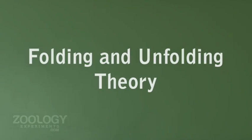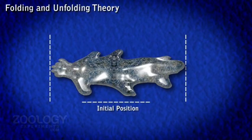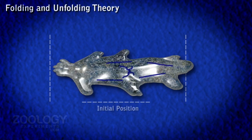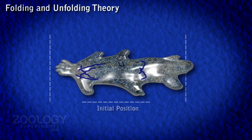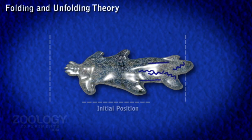Locomotion: Folding and Unfolding Theory. The folding and unfolding of protein chains causes contraction and relaxation of protein molecules. The sol state of protoplasm is due to the folding of protein molecules, and the gel state is due to the unfolding of protein molecules.